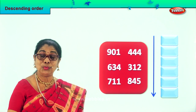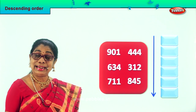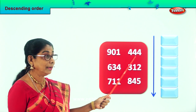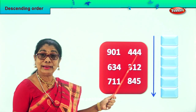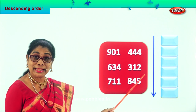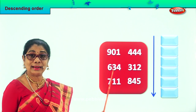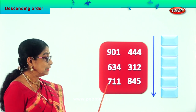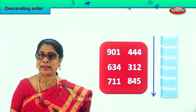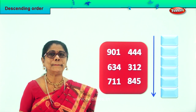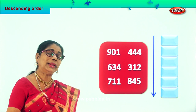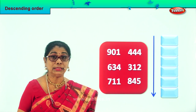Descend — come downward. Alright, let's read aloud the numbers. Nine hundred and one, four hundred forty-four, three hundred twelve, six hundred thirty-four, seven hundred eleven, and eight hundred forty-five. These are the six sets of numbers given to us. Let's look at the hundredth place and identify the biggest number.